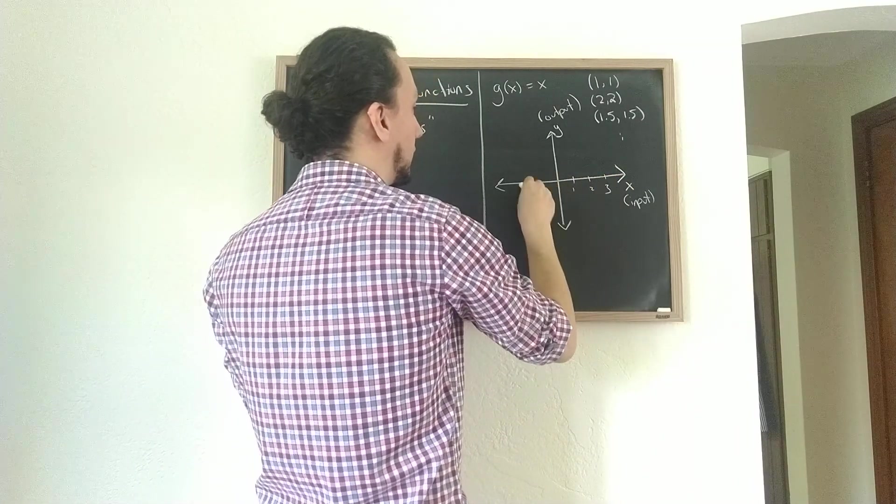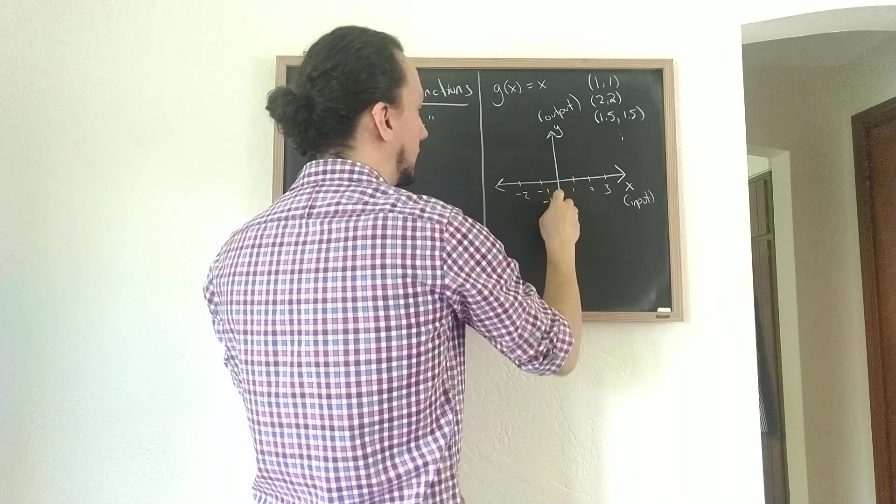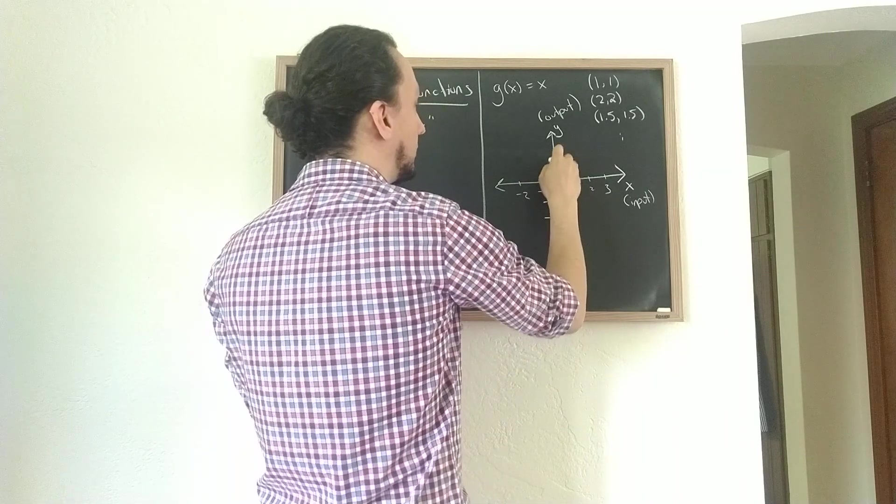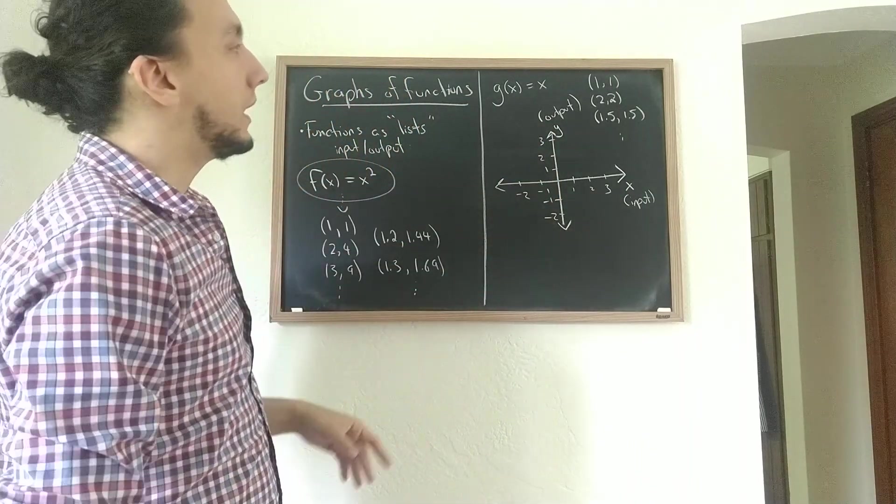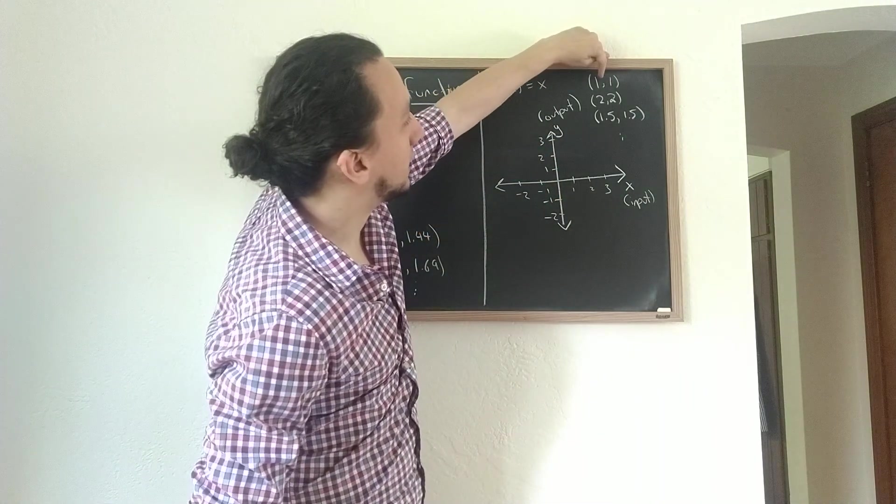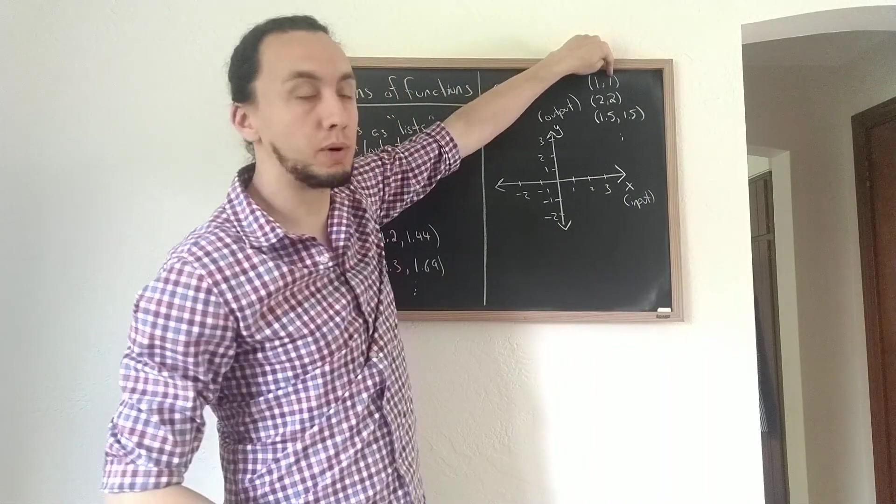So here I have 1, 2, 3, negative 1, negative 2 on both axes, labeling the axes. The point is that the fact that the input of 1 generates an output of 1 is captured by drawing a single point, a single dot, on this two-dimensional picture.